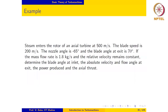Let us work out an example that requires us to construct a velocity triangle and calculate a few quantities of interest for an axial turbine. Steam enters the rotor of an axial turbine at 500 meters per second. The blade speed is 200 meters per second. The nozzle angle is minus 65 degrees.